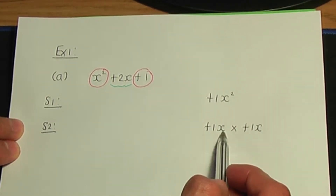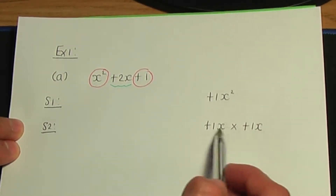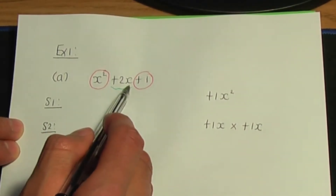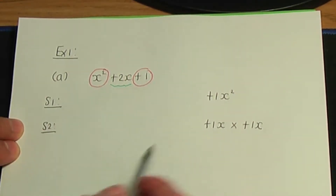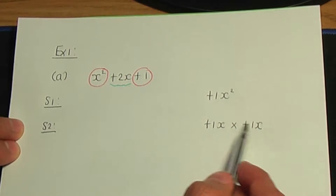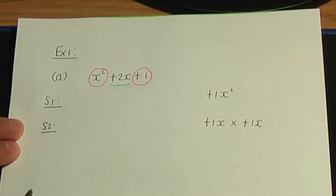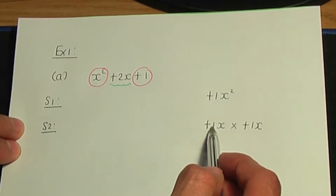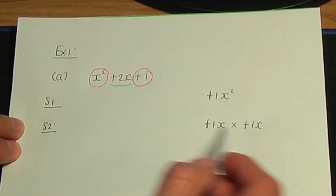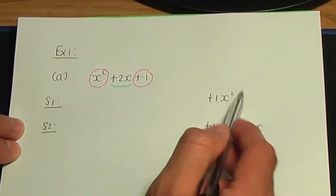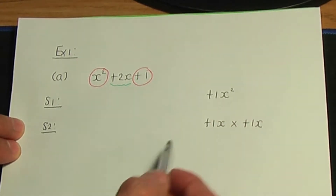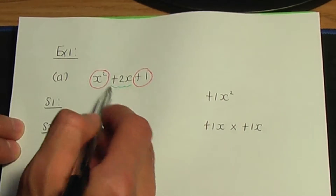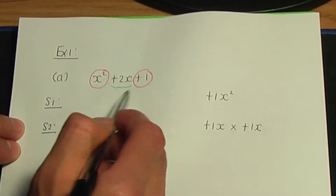Plus 1x times plus 1x gives us plus 1x squared — the answer to step number 1. And plus 1x plus 1x, when added together, gives the x term plus 2x. Your two terms need to satisfy both conditions: when multiplied they give the answer to step 1, and when added they give the x term in the quadratic.